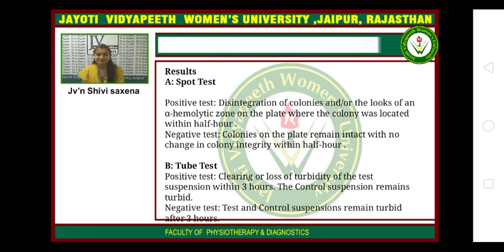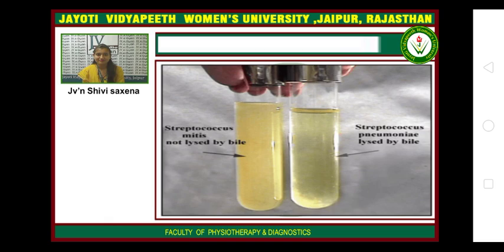Results interpretation — Plate test: A positive result shows disappearance of colonies and loss of the alpha-hemolytic zone on the plate where the colony was located within 30 minutes. A negative result shows colonies on the plate remaining intact with no change in colony integrity within 30 minutes. Tube test: A positive result shows clearing or loss of turbidity of the test suspension within 3 hours, while the control suspension remains turbid. A negative result shows both test and control suspensions remaining turbid after 3 hours. In summary, Streptococcus mitis is not lysed by bile, while Streptococcus pneumoniae is lysed by bile.